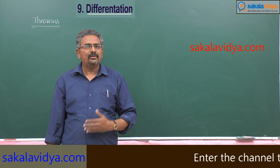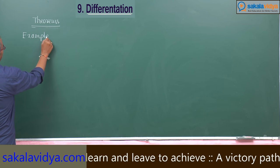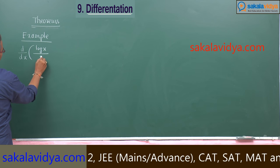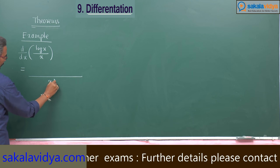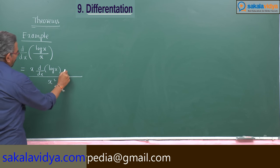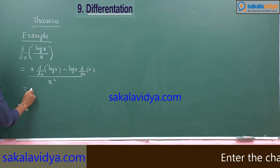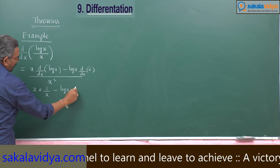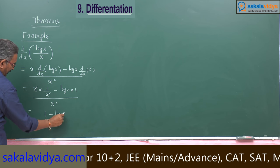Let us examine one problem on the quotient rule. Example: d/dx of log(x)/x. This is u/v form. So first, v squared, that means x squared. Then x into d/dx of log(x), minus log(x) into d/dx of x. That gives x into (1/x) minus log(x) into 1, all over x squared. The x's cancel, so we have (1 minus log x) / x squared.